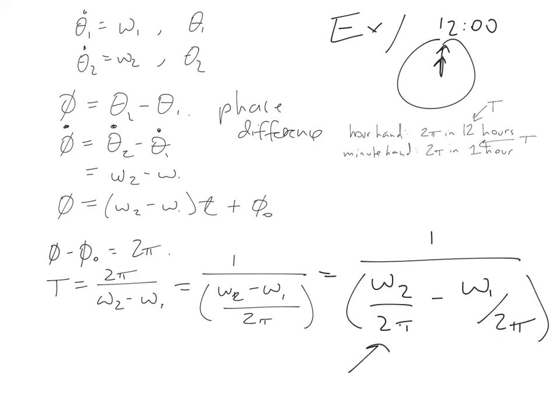Which is itself equal to 1 over omega 2 over 2 pi minus omega 1 over 2 pi, where omega 2 over 2 pi is 1 over T2 and omega 1 over 2 pi is 1 over T1. So this equals 1 over 1 over T2 minus 1 over T1.